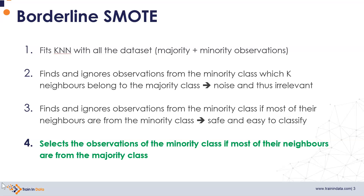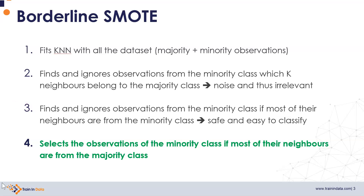There are two things that Borderline SMOTE will do as part of its logic. First, it will find and ignore all observations from the minority class if all of their neighbors belong to the opposite class, because Borderline SMOTE considers these samples noise and therefore irrelevant. It will also find and ignore all observations from the minority class if most of their neighbors are also from the minority class, because it considers these samples easy to classify.